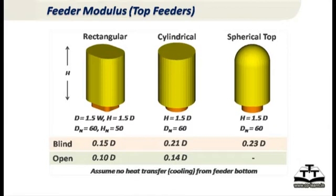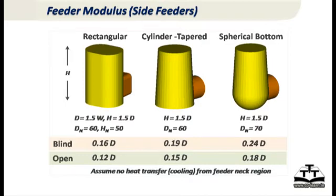Dn is the diameter of the neck and height of the neck. When calculating this modulus, we assume there is no heat transfer from the bottom of the feeder — heat transfer only from the sides and the top. These equations hold for side feeders as well. In general for the neck, you assume that the feeder bottom never transmits heat, and if it is a side feeder or side neck, you assume that the feeder neck area is the same as the bottom of the feeder. This simplifies your feeder modulus calculations.